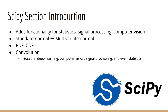We'll also look at how SciPy can calculate special probability functions, such as the PDF and the CDF. And finally, we'll look at how SciPy can be used to do convolution, one of the most fundamental operations in deep learning, computer vision, signal processing, and even statistics.